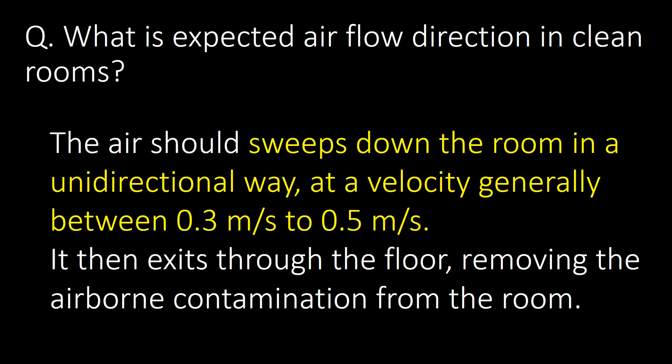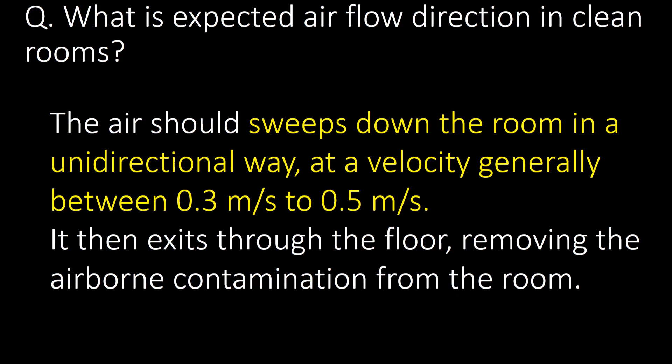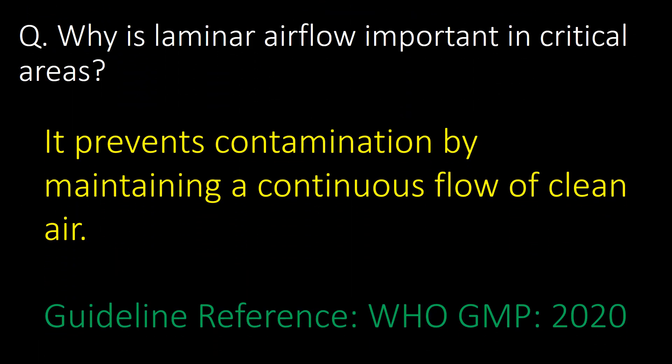What is the expected airflow direction in clean rooms? The air should sweep down the room in a unidirectional way at a velocity generally between 0.3 and 0.5 meters per second, exiting through the floor and removing airborne contamination. Laminar airflow prevents contamination by maintaining a continuous flow of clean air. Reference guideline: WHO GMP 2020.